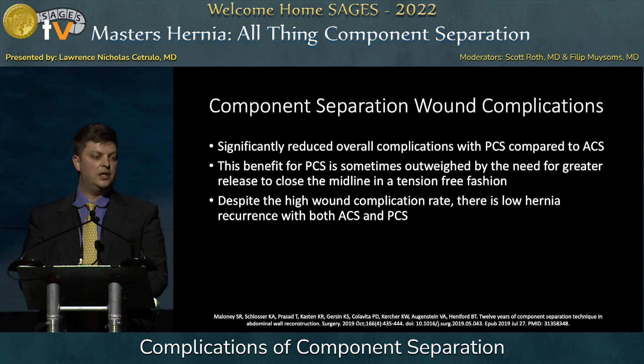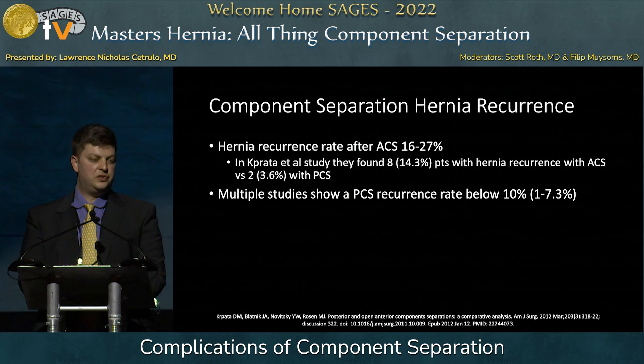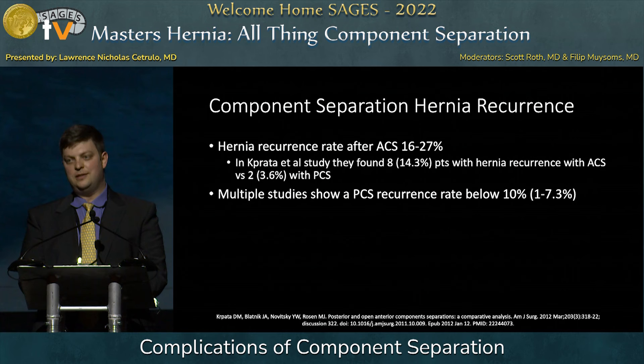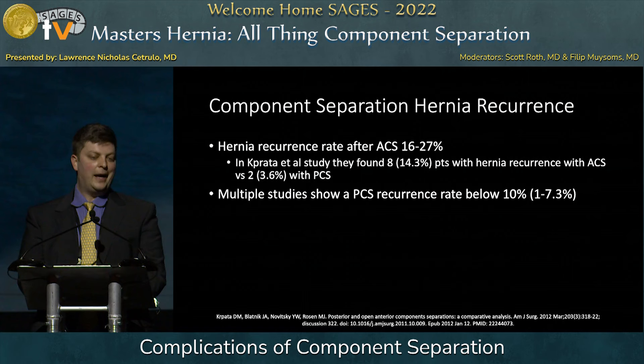Regarding hernia recurrence after anterior component separation, this study found a rate of 16 to 27%. They also found eight hernia recurrences in the anterior group versus two in the posterior component separation group. Overall, the current literature shows a slight reduction in recurrence rate with posterior versus anterior component separation. As these techniques are used over the next 10 years, we're going to get better, more robust data with much more accurate numbers.